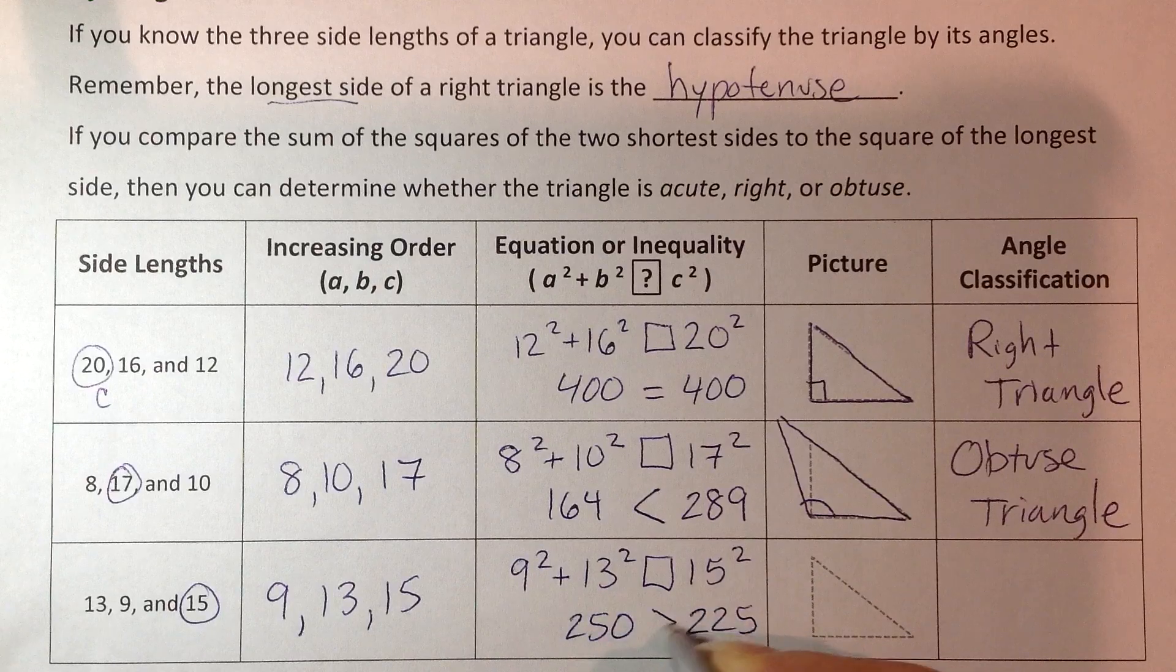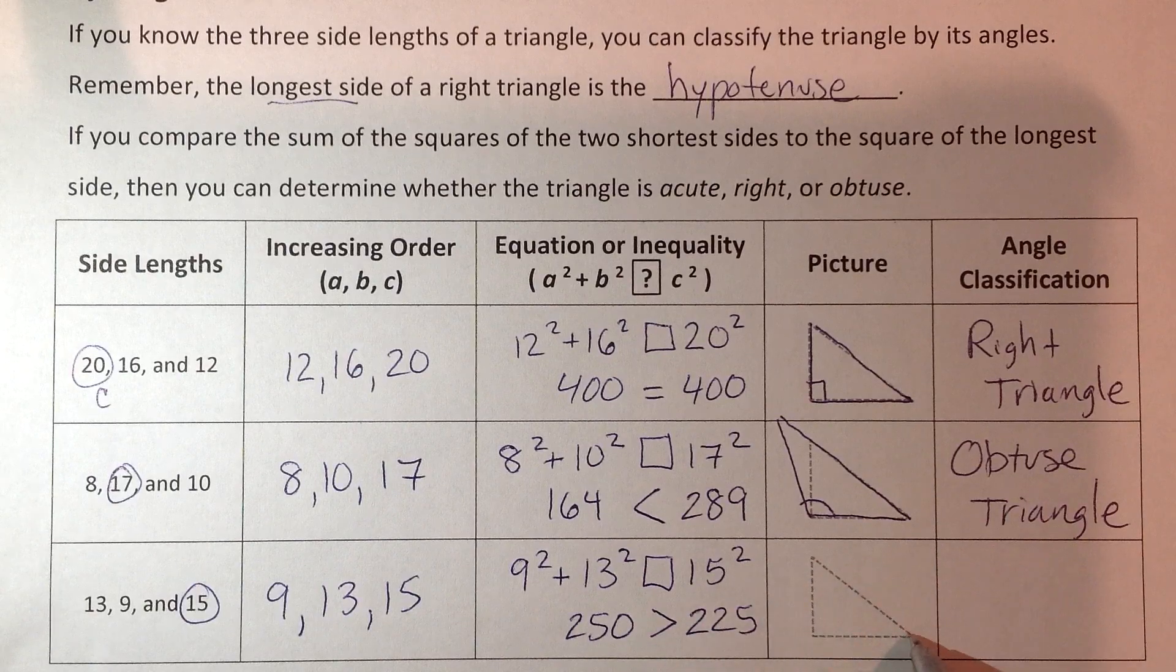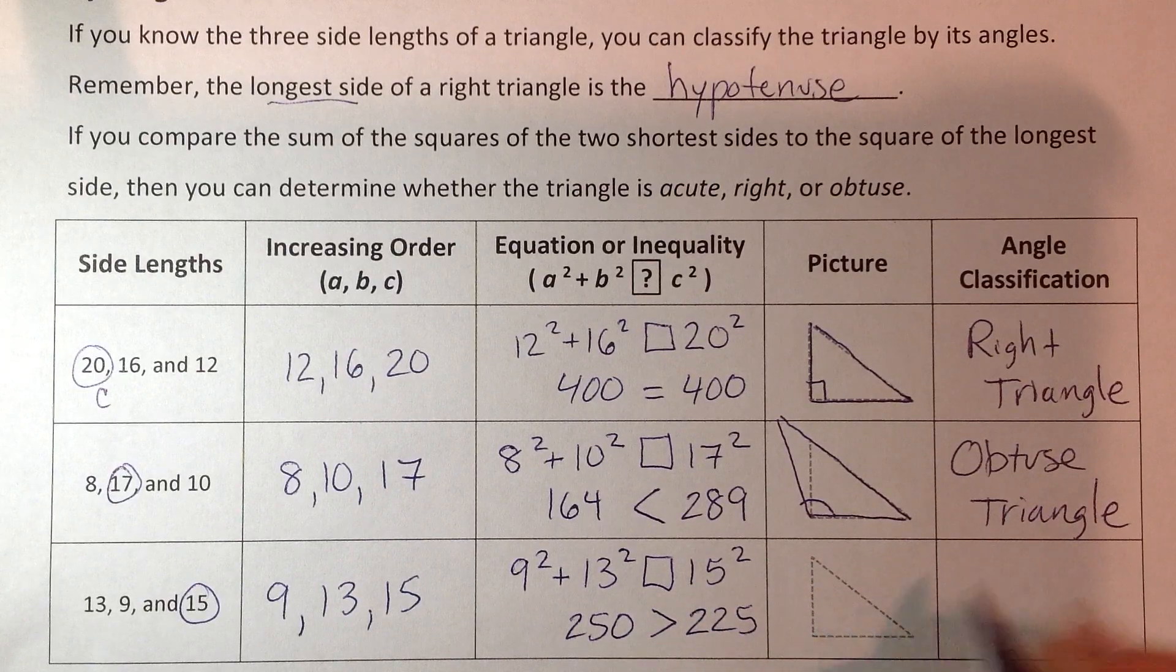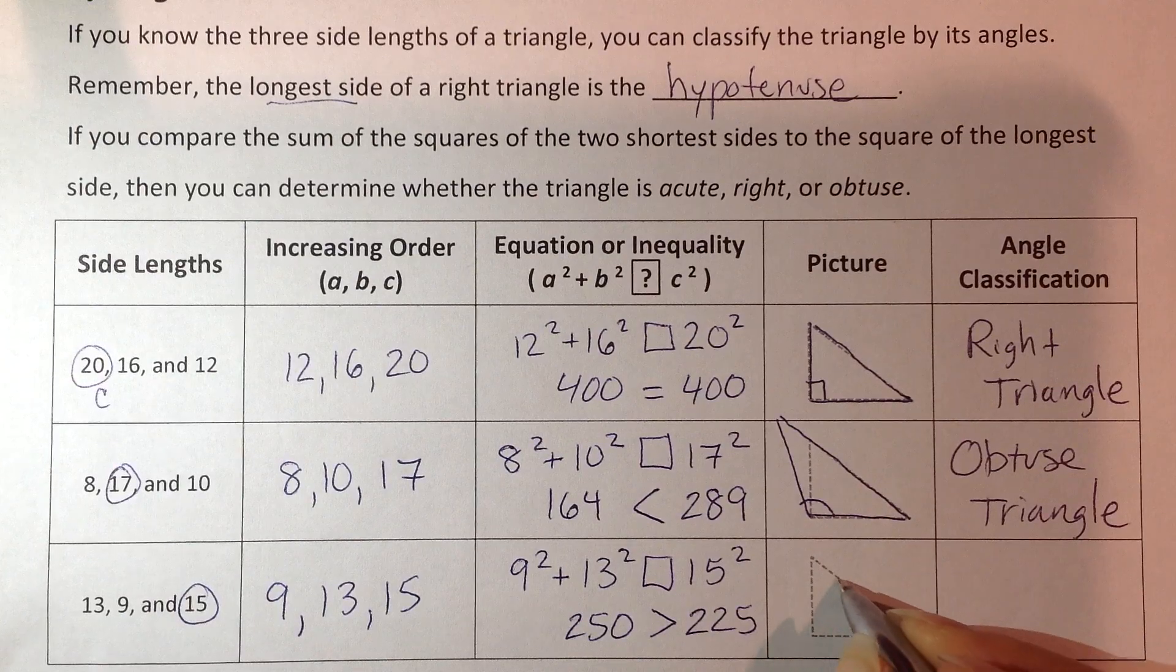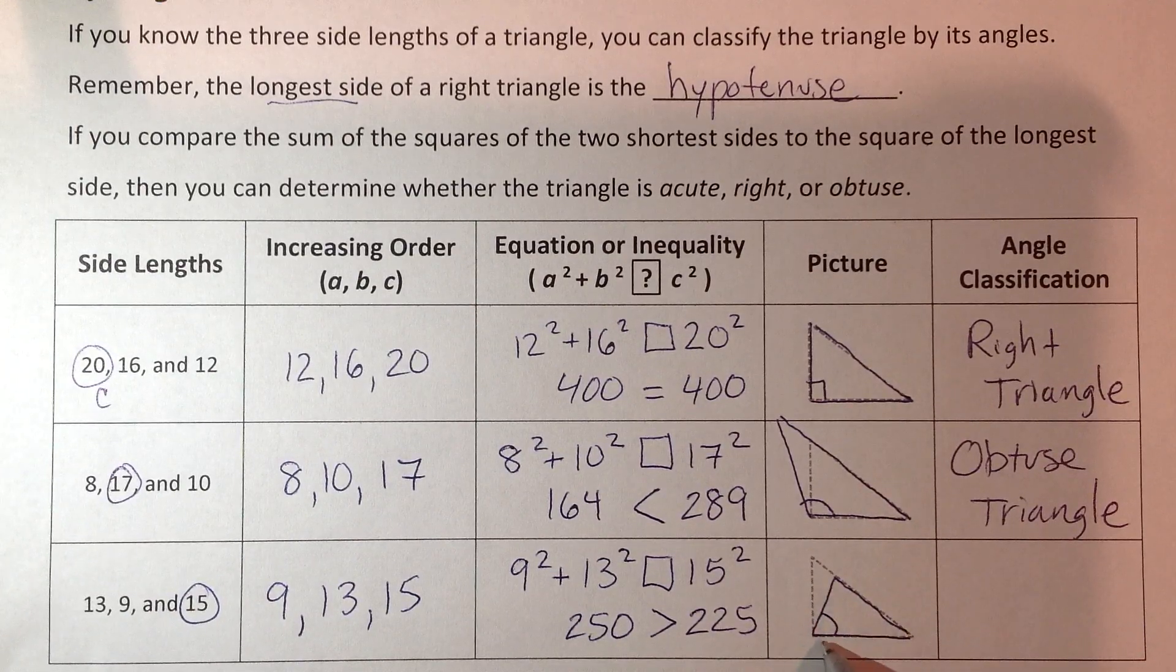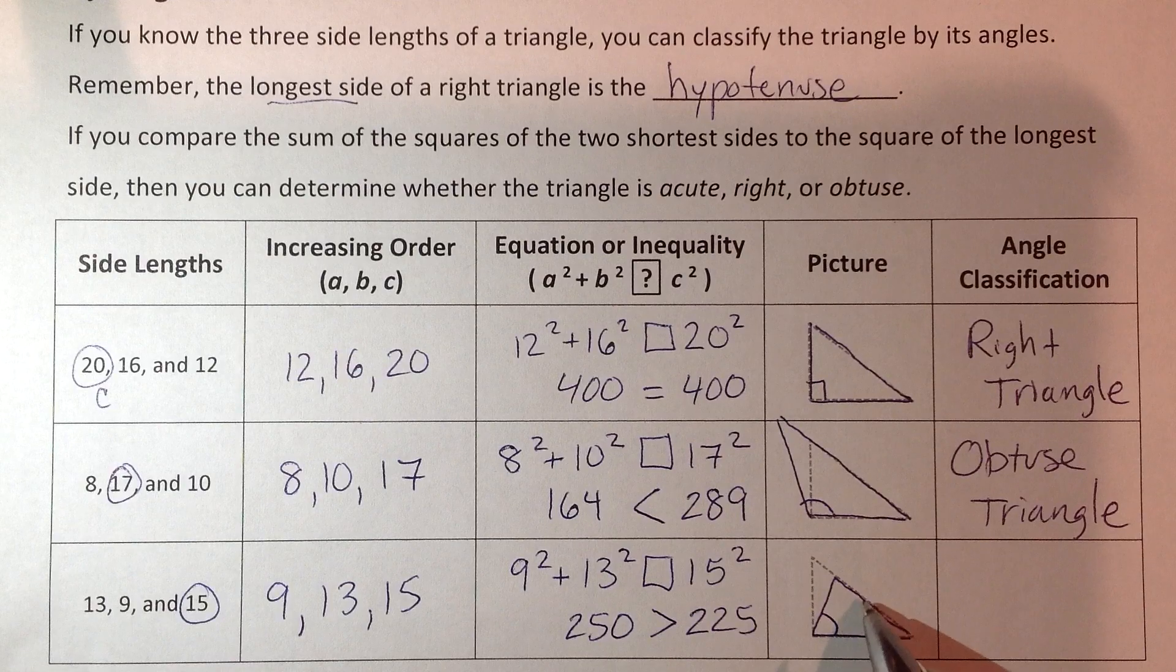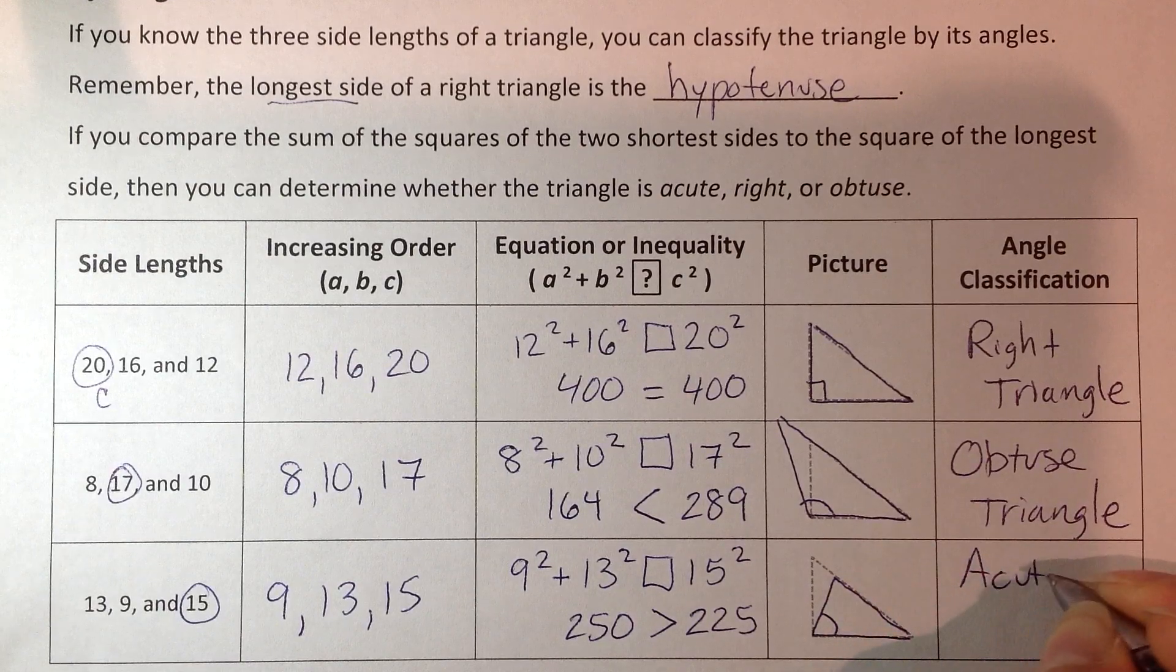225 is actually smaller. So this became larger. So again, visualize what happened to C. If it was a right triangle, it would look like that. So it got shorter. So what happened then to that angle that was opposite it? It was 90, now it got smaller to make that side smaller. So this is acute.